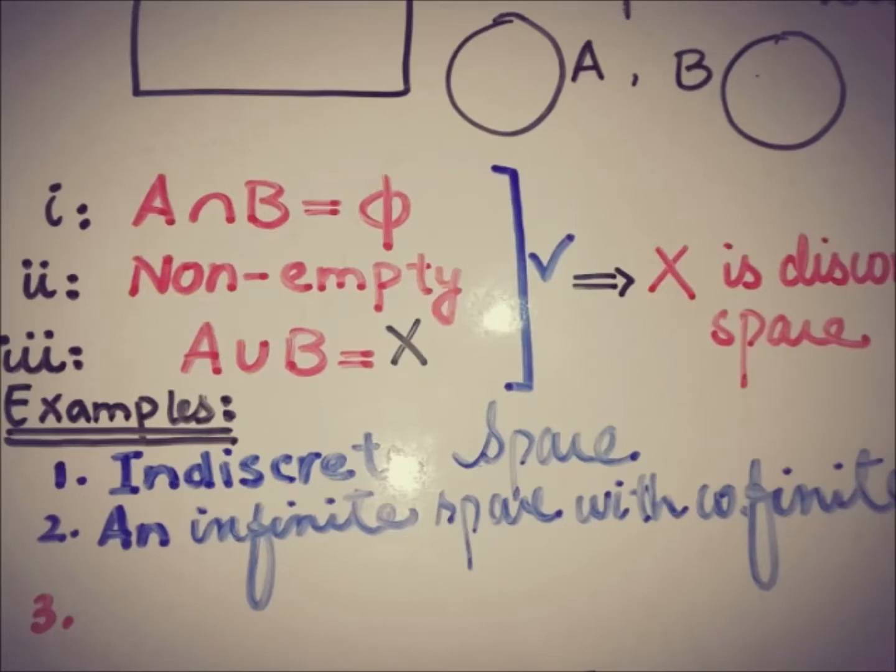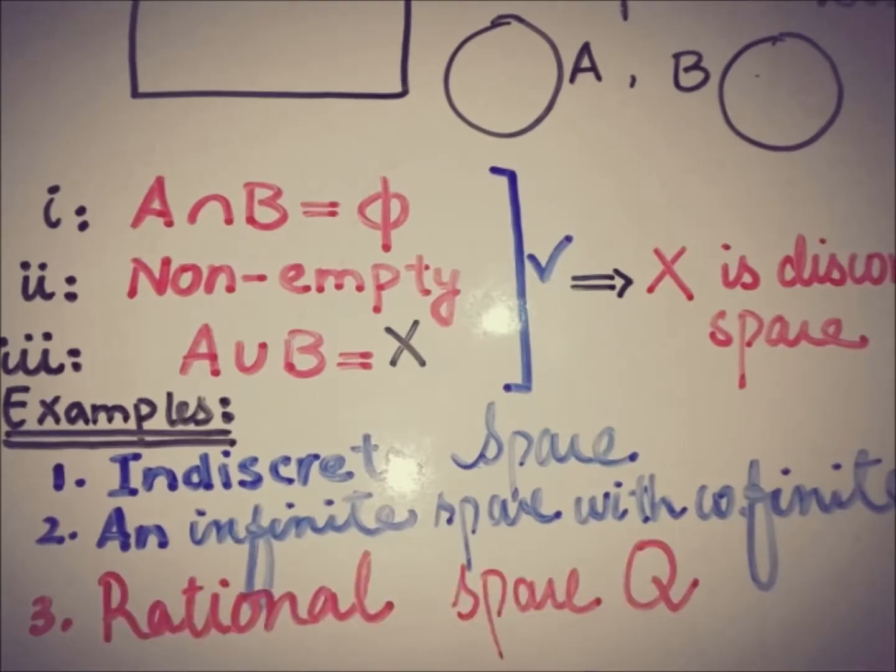And an example of a connected space is that if we take a subspace of a real line. Here I'm not going into a proof of how indiscrete space is an example of the connected space, how infinite space with the co-finite topology is an example of the connected space, and how rational space that is represented by Q is an example of the disconnected space.